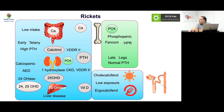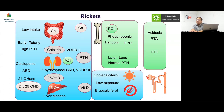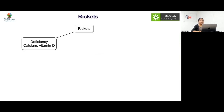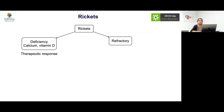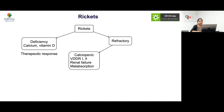Vitamin D-dependent rickets forms present early with bone pain, tetany, and high parathyroid hormone levels. Acidosis has a direct adverse effect on bone health; proximal or distal RTA results in failure to thrive, polyuria, nephrocalcinosis, and azototic breathing. The most common cause — calcium and vitamin D deficiency — has a very good therapeutic response, while refractory rickets shows lack of response after adequate calcium and vitamin D for 90 days.